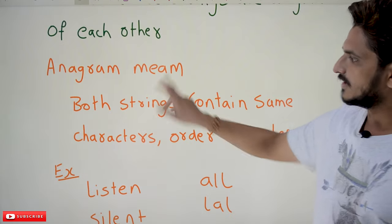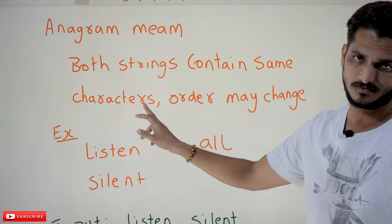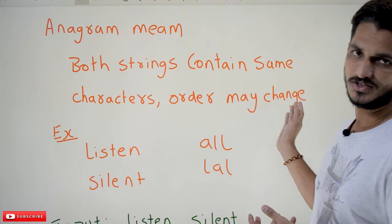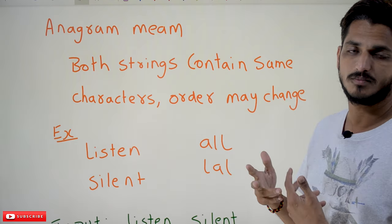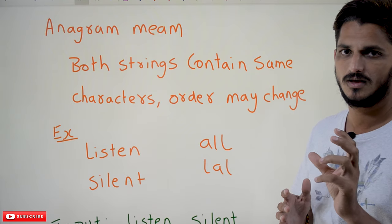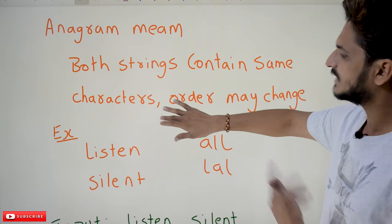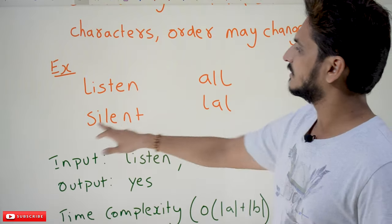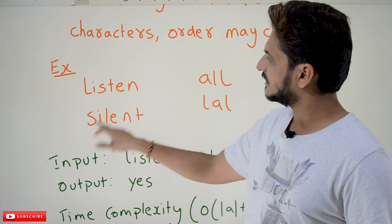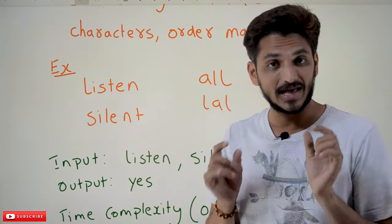Anagram means both strings contain the same characters. The order may change — it can be in any order — but they must contain the same number of characters, same characters. To understand it better with an example: listen and silent. L, I, S, T, E, N — both contain the same characters.